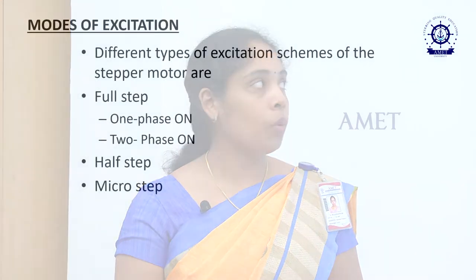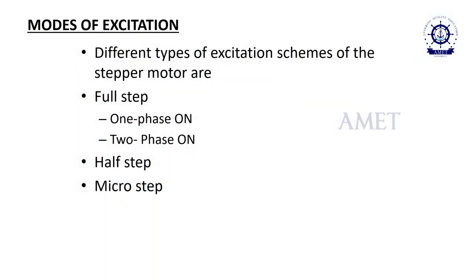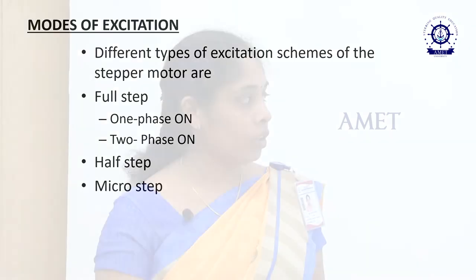The mode of excitation refers to how we can operate stepper motors based on applications, because for each application the speed is different. Depending on the application, we can go for any mode of excitation. The different types of excitation schemes are: full step (with one phase on and two phase on), half step, and micro-step.